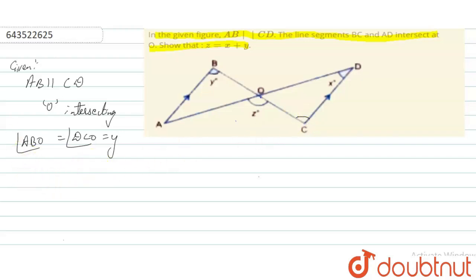Now what will we do? For line AD, we can say Z plus COD is equal to 180 degrees. For this line, this angle plus this is equal to 180 degrees.